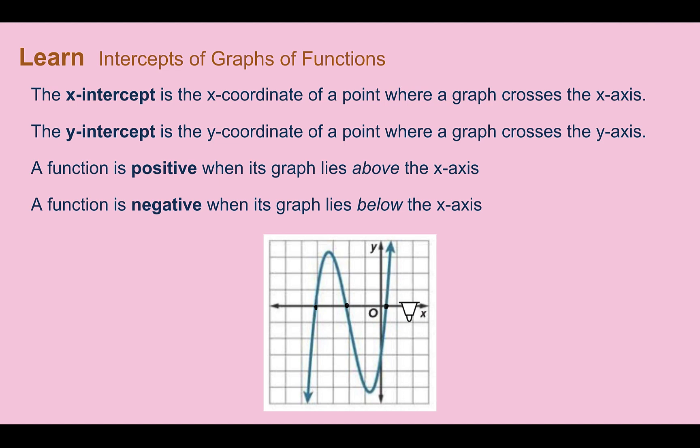The y-intercept is the y-coordinate of a point where the graph crosses the y-axis. For a function it should only have one y-intercept. If it had more than one, that would mean a vertical line went through more than one point when x was zero, so it wouldn't actually be a function.